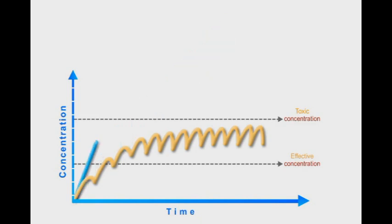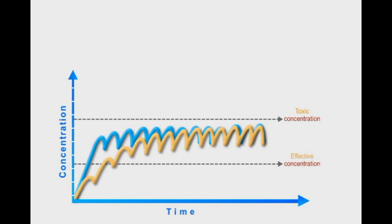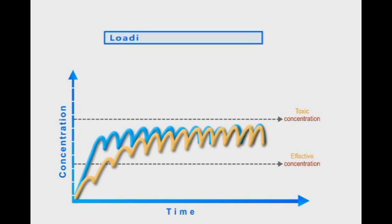Therefore, the loading dose is used just for once, and then followed by the usual moderate dosing rate. Mathematically, the dosing rate is equal to the volume of distribution multiplied by the steady state concentration.